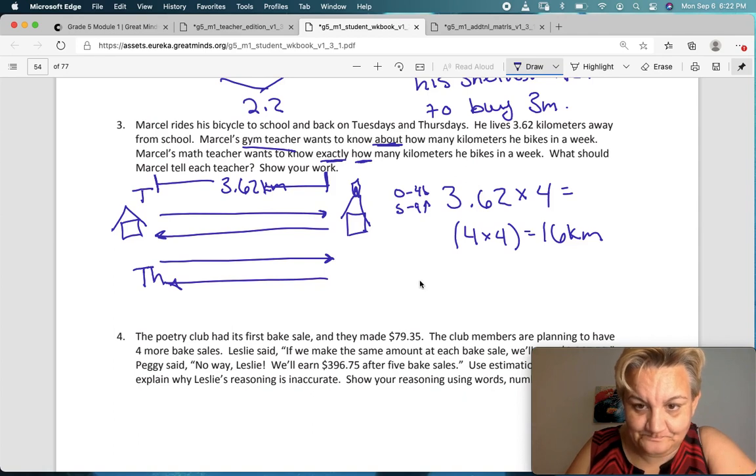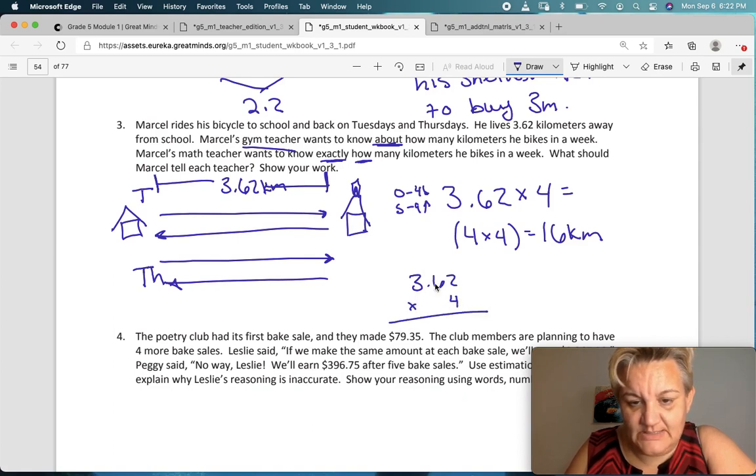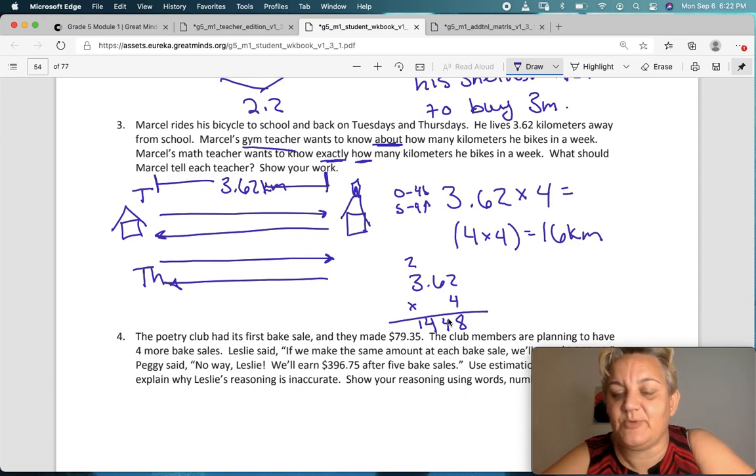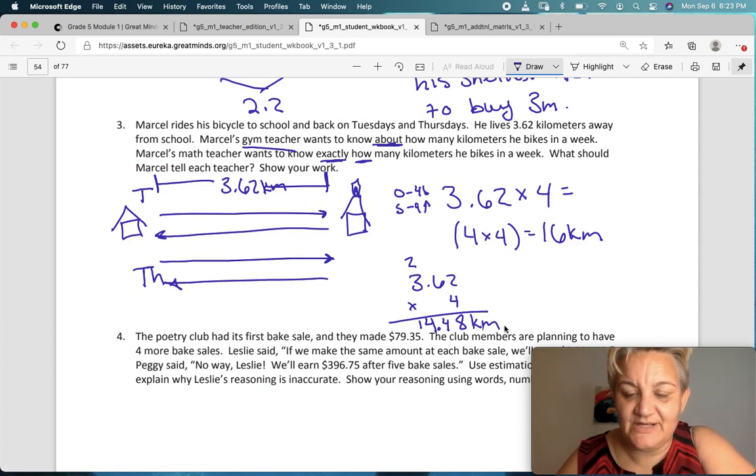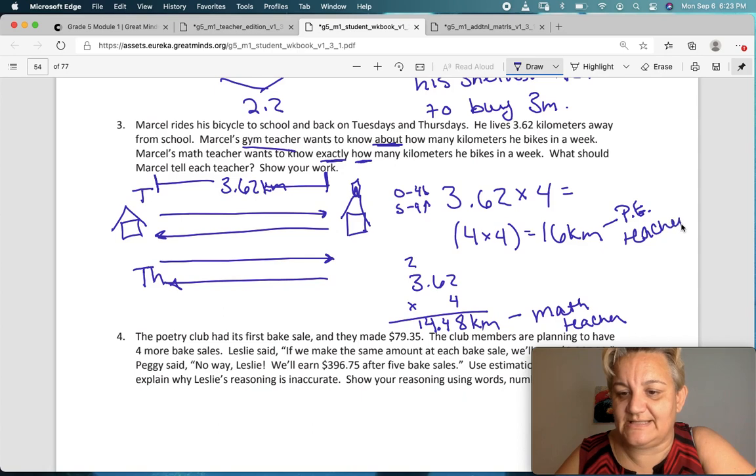Now, what can he tell the math teacher? The math teacher wants to know the actual answer. So, let's see. How would you like to do this? Let's just go the old-fashioned way. And we're going to multiply across. So, right now, you can ignore that decimal because we're multiplying, so just ignore it. 4 times 2 is 8. 4 times 6 is 24. Carry the 2. 4 times 3 is 12, plus 2 is 14. Now, where are you going to put that decimal point? Well, your estimation said that it was 16 kilometers. What we know is actually a little bit less than that, so 14.48 kilometers is probably the exact number.